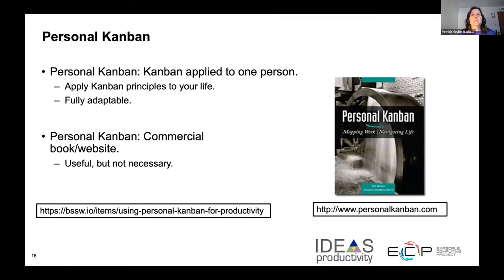Kanban can also be used to organize your personal life or personal tasks for work projects. You can dive deeply into the subject in the Personal Kanban book, or go to the article on our Better Scientific Software website, bssw.io, which has links to quick references for personal Kanban and points to tools I'll discuss next. It also has other helpful articles for productivity for both teams and individuals. I use Kanban to manage my work across several different projects — I can see the progress of my tasks and ease the cost of context switching. You can share your Kanban with team members or family members.